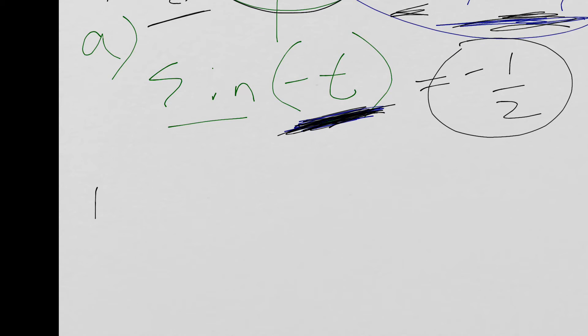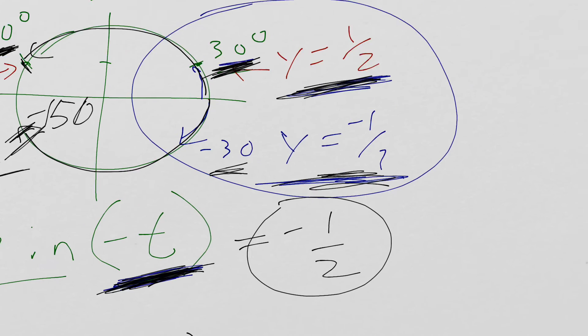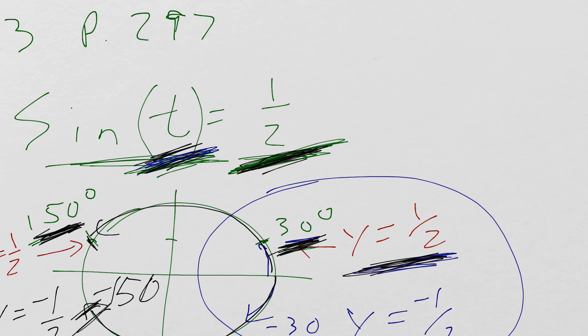Part B, cosecant of negative T. Well, first, let's figure out the cosecant of positive T. Sine of T is 1 half. If we remember, cosecant is the reciprocal.